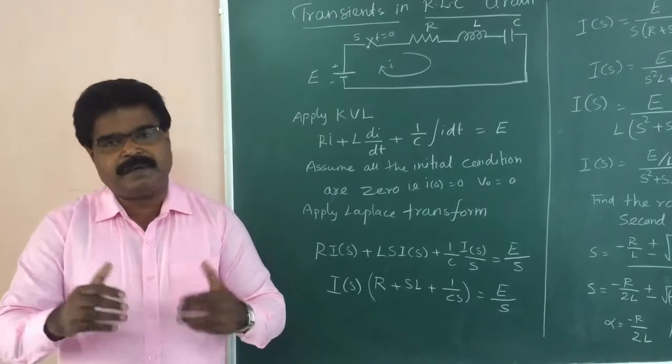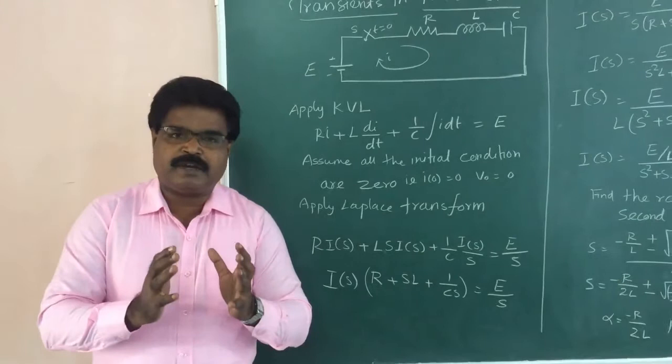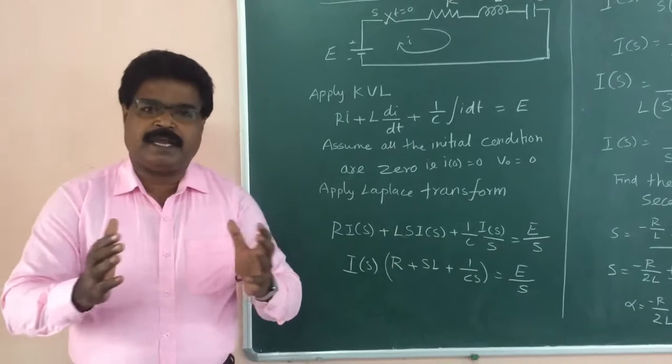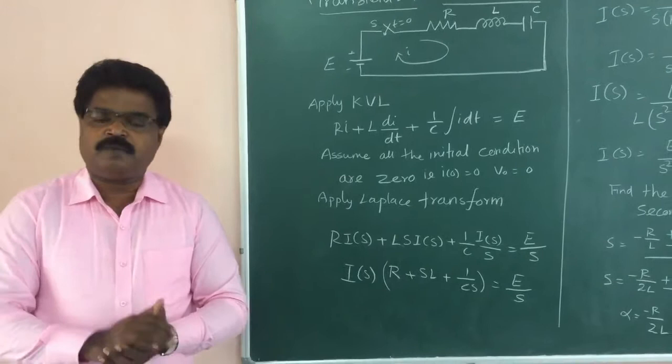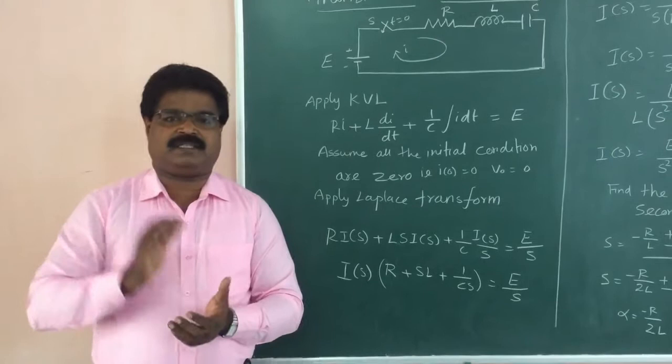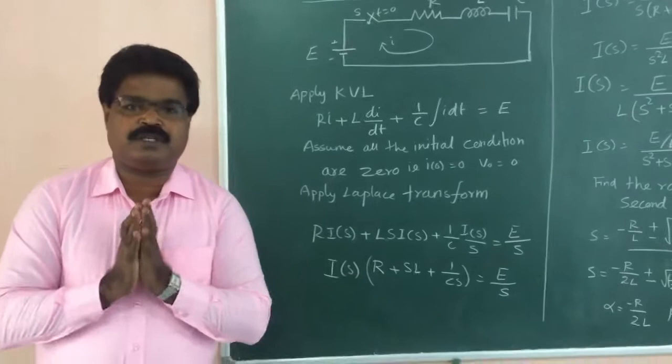First you have to write Kirchhoff's voltage law equation in time domain. Then apply Laplace transform. Then find I of S. Then separate the terms by using partial fractions. Then find the value of A, B, C. Substitute the value of A, B, C in I of S. Then apply Laplace inverse and we will get I of T. This is the standard procedure in transients.